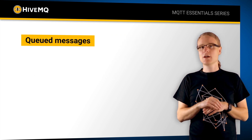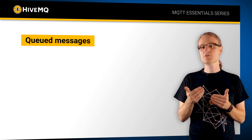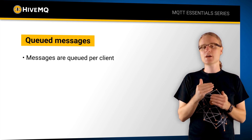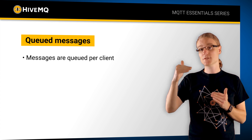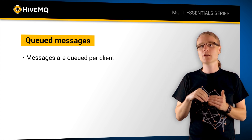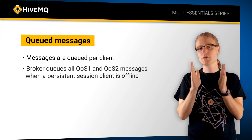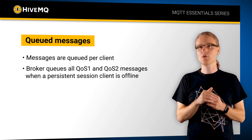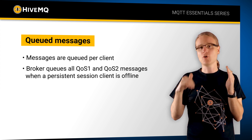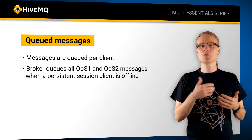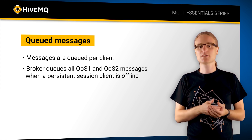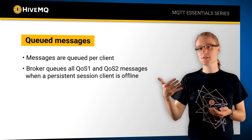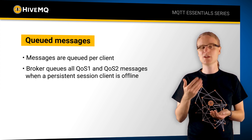Then we have message queuing, which is something very unique to MQTT because messages are queued per client — but only for persistent session clients. So if you have a persistent session client which is offline and you have active subscriptions, the broker will queue all quality of service one or two messages for you which you missed while you were offline. This means if you were offline for a while and you go online again, the broker will re-deliver messages you missed. So even if you have a connection hiccup on the client side, you get the freshest information and you don't miss a message. You need a persistent session and you need to utilize quality of service one or two messages here.